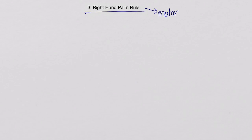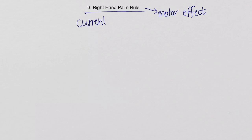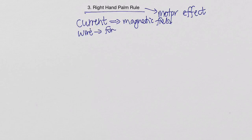The third rule is the right hand palm rule, and we use this with the motor effect. What happens with the motor effect is: if you have a current flowing and that current is in the presence of a magnetic field, then that wire will experience a force. We can work out the direction of that force using this right hand palm rule — that is called the motor effect.